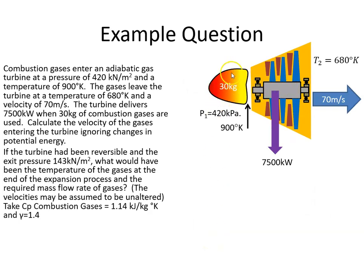So this is our turbine, these are our gases. We're told there's 30 kg of gases coming through the turbine. The pressure at the inlet is 420, the temperature is 900 degrees Kelvin, and the temperature at the outlet is 680.